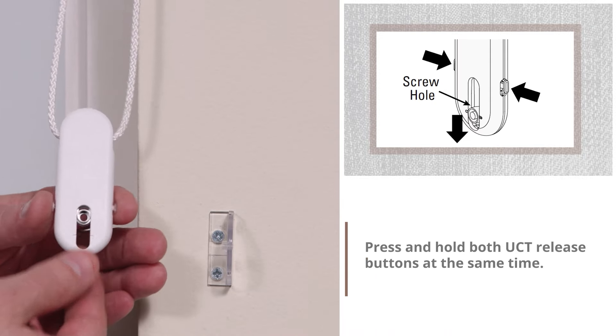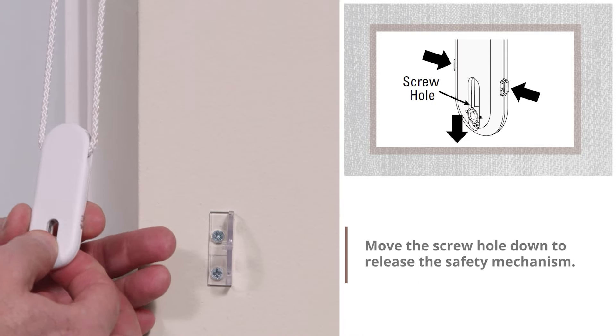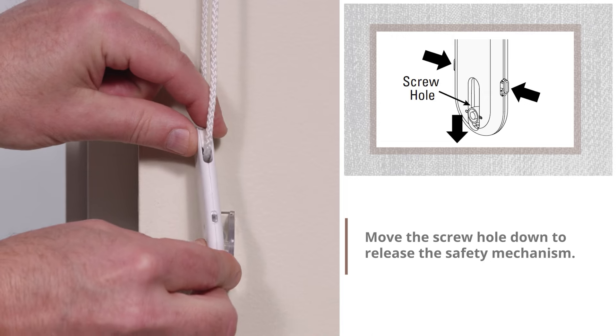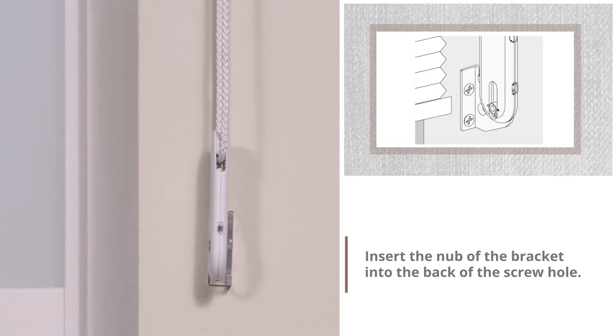Press and hold both UCT release buttons at the same time. Move the screw hole down to release the safety mechanism. Insert the nub of the bracket into the back of the screw hole.